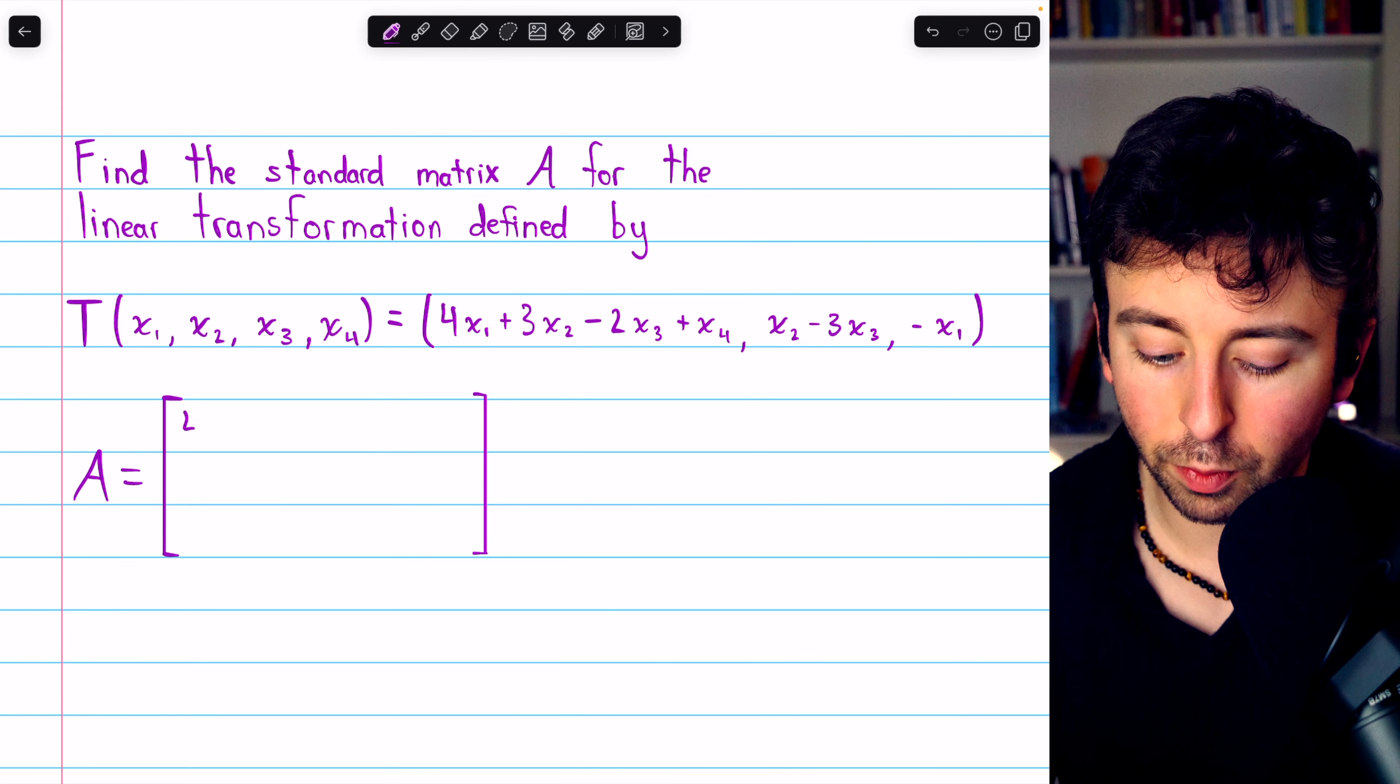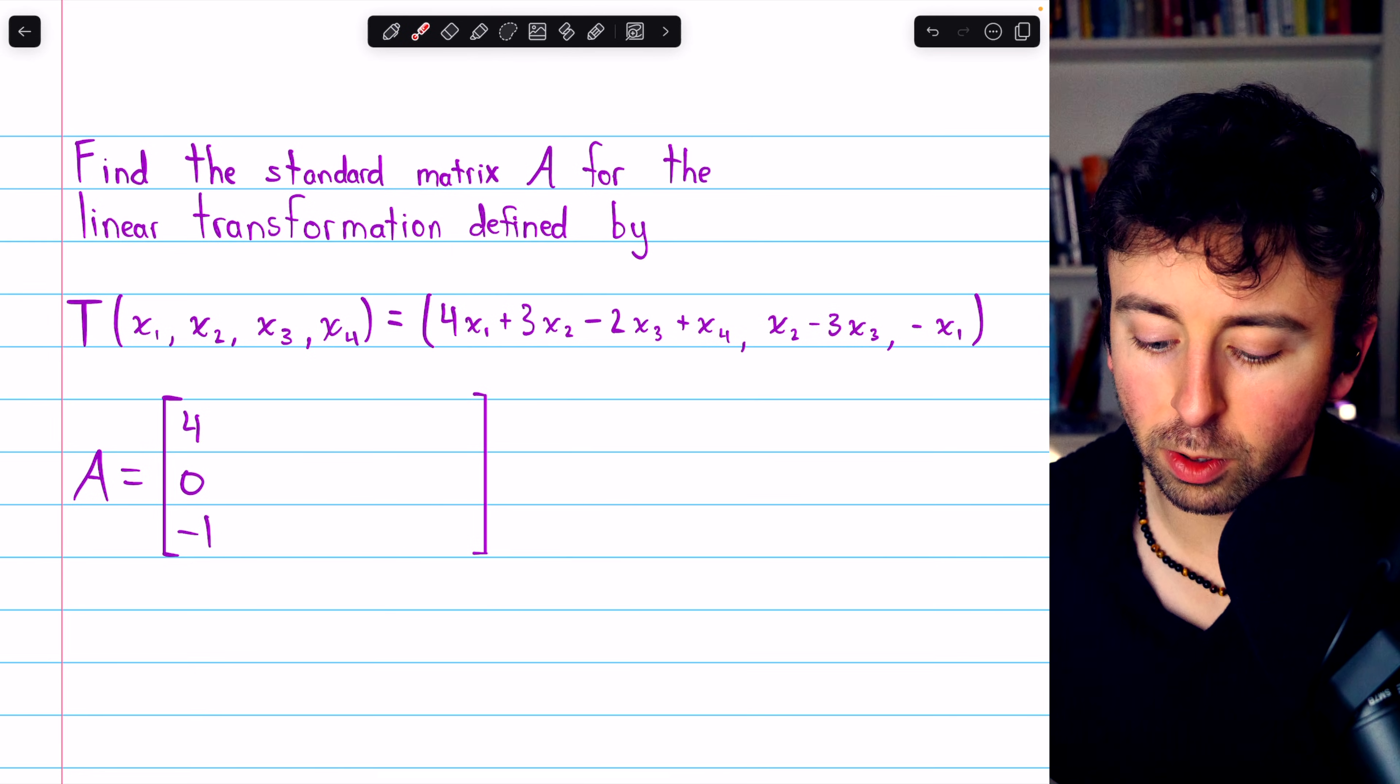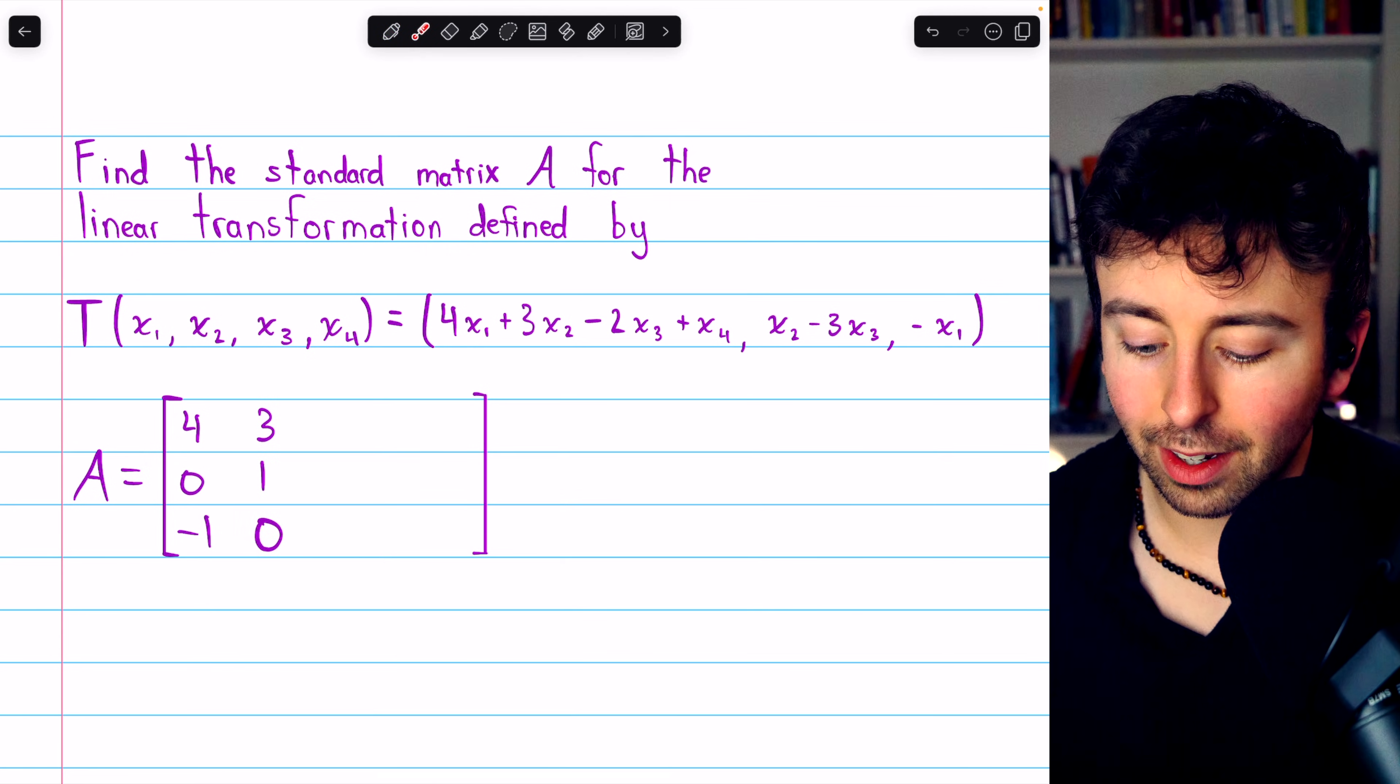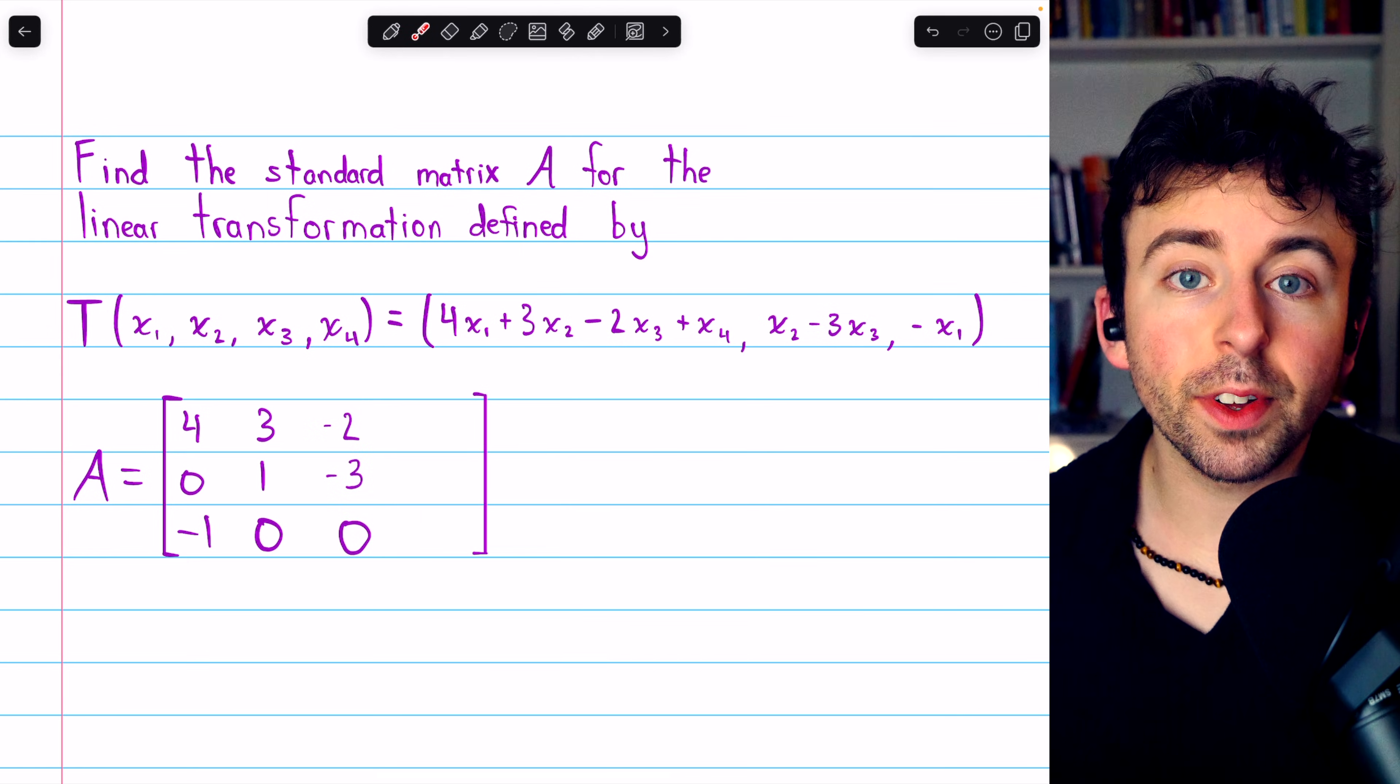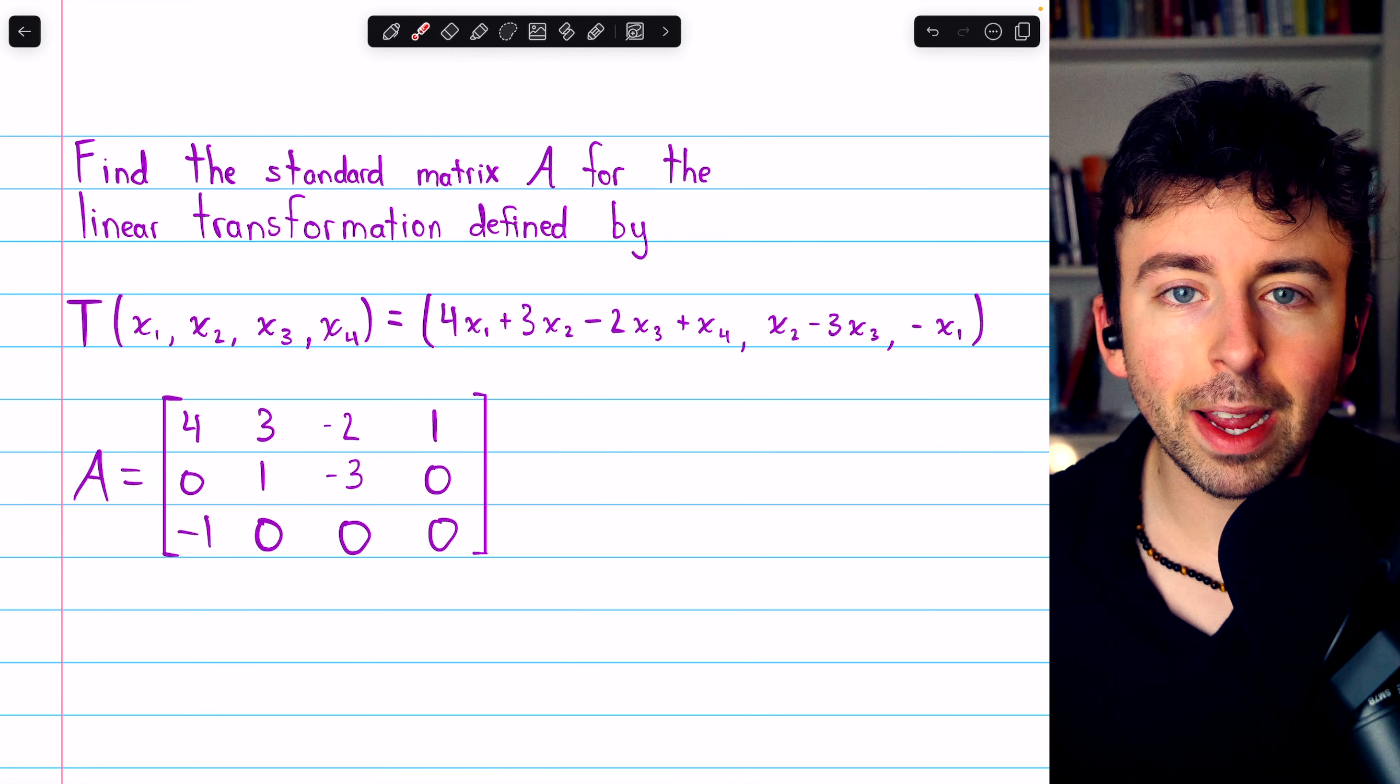For column 2, we look at the coefficients of x2 in the transformation equation: 3, 1, 0. For the third column, we look at the coefficients of x3: negative 2, negative 3, 0. Finally, for the last column, we look at the coefficients of x4: 1, 0, 0. And that is the standard matrix for this transformation.